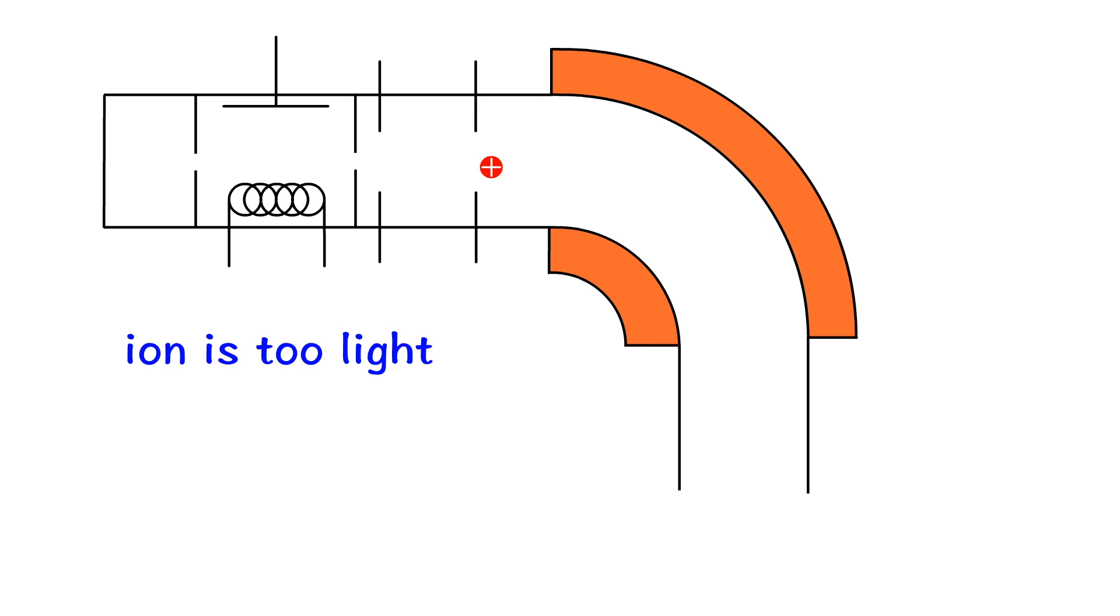On the other hand, for those sample cation with smaller mass, because the magnetic field is too strong for them, and hence, the deflection will be too quick, once again, they will hit the wall of the mass spectrometer. Only the sample cation with suitable mass can deflect by the magnetic field and move along the mass spectrometer and reach the detector.